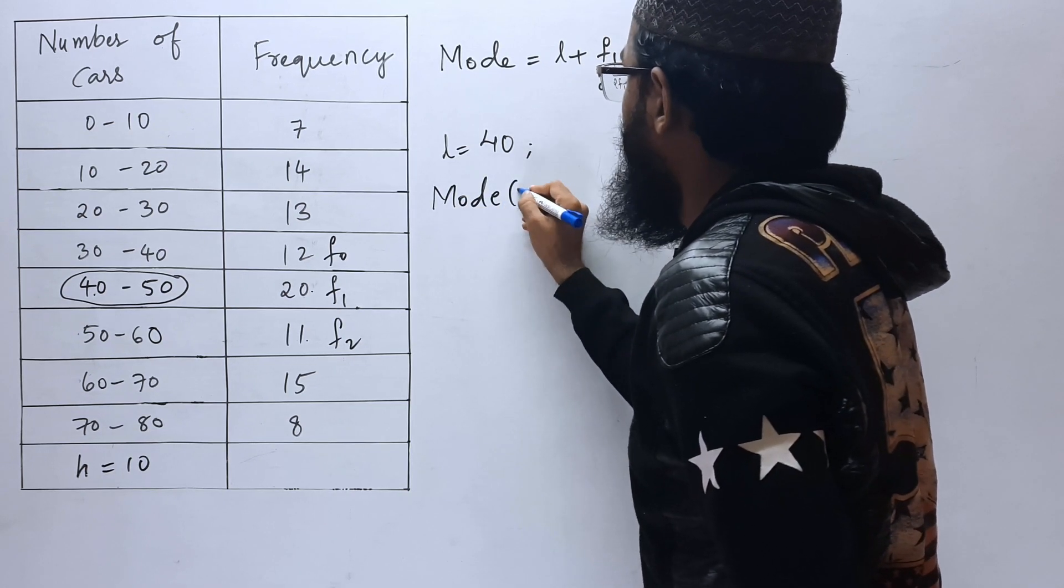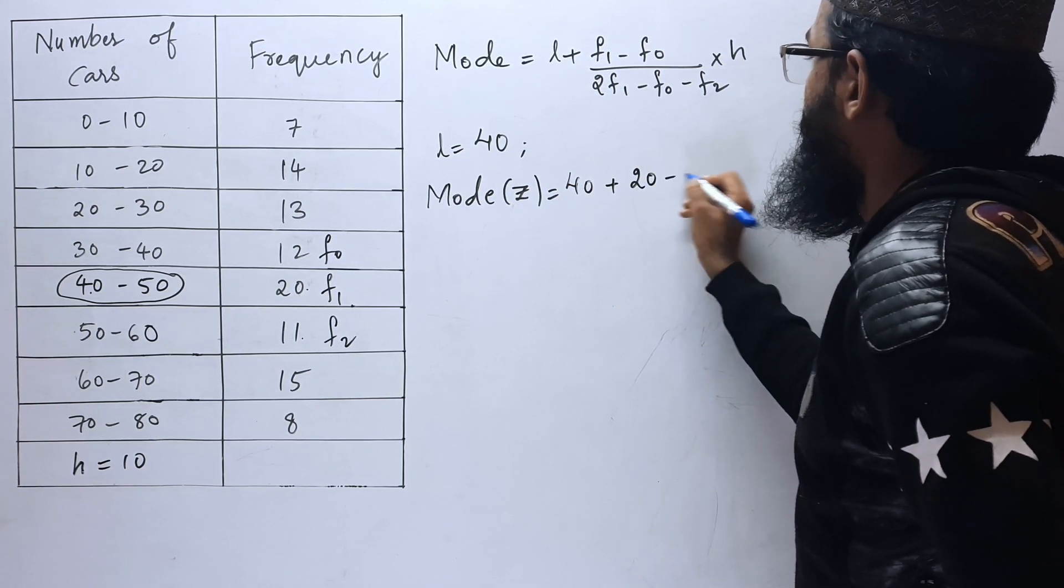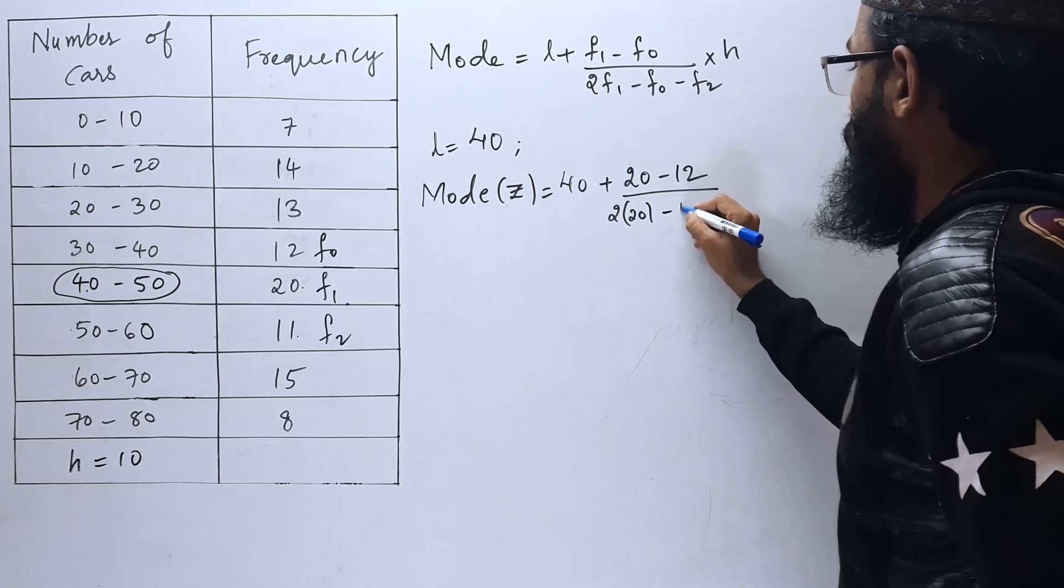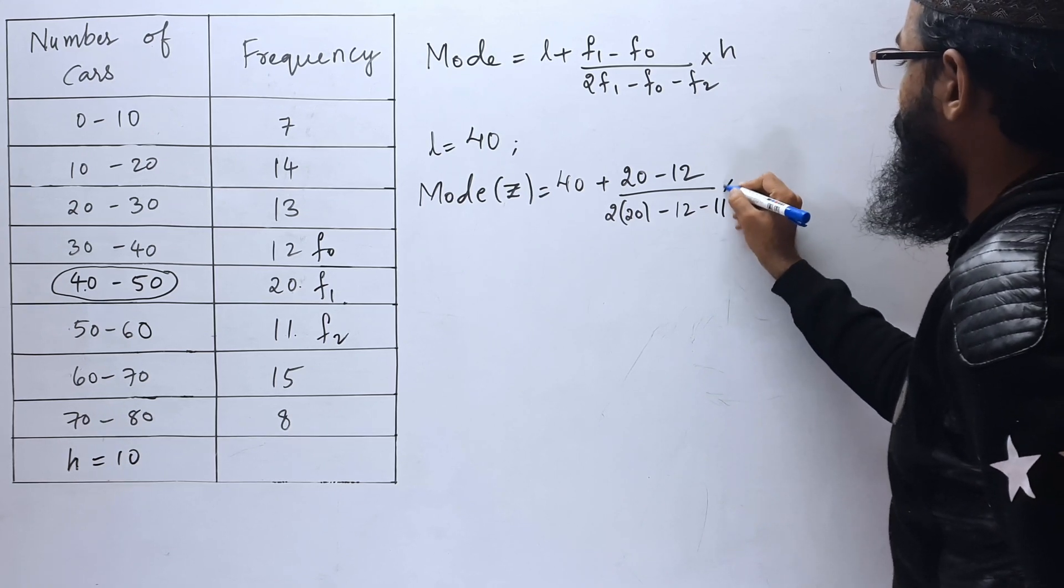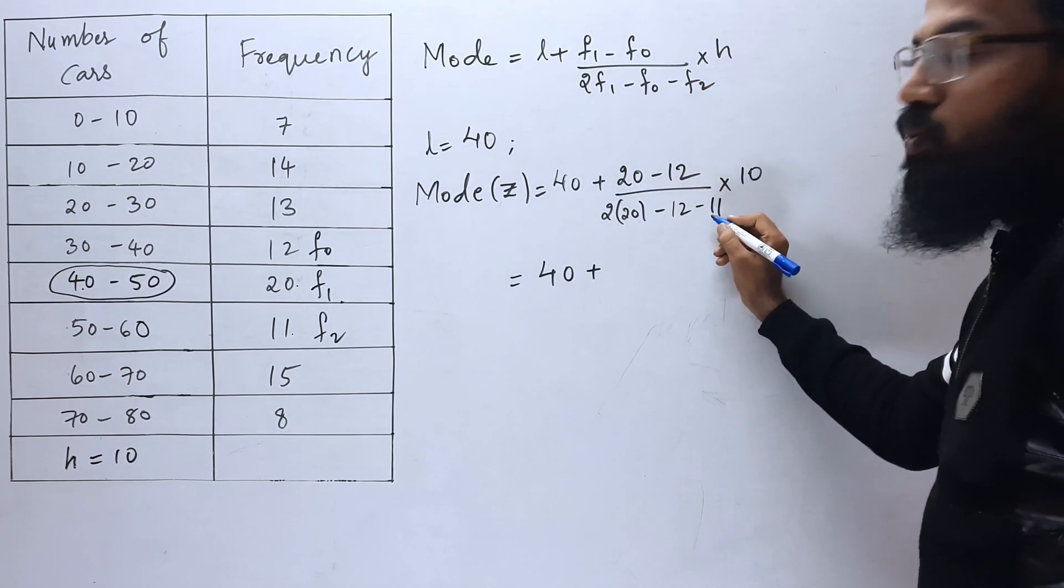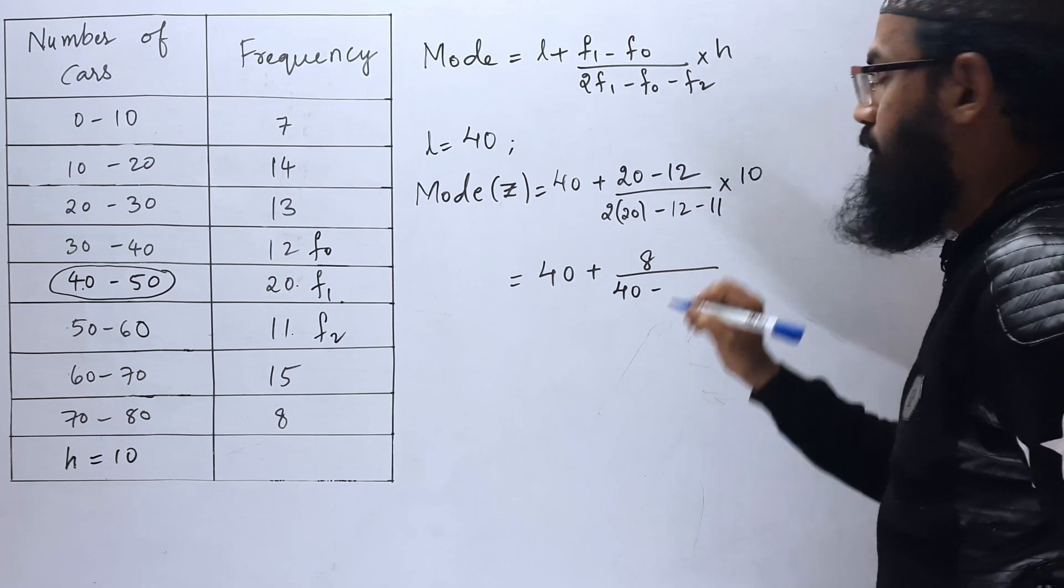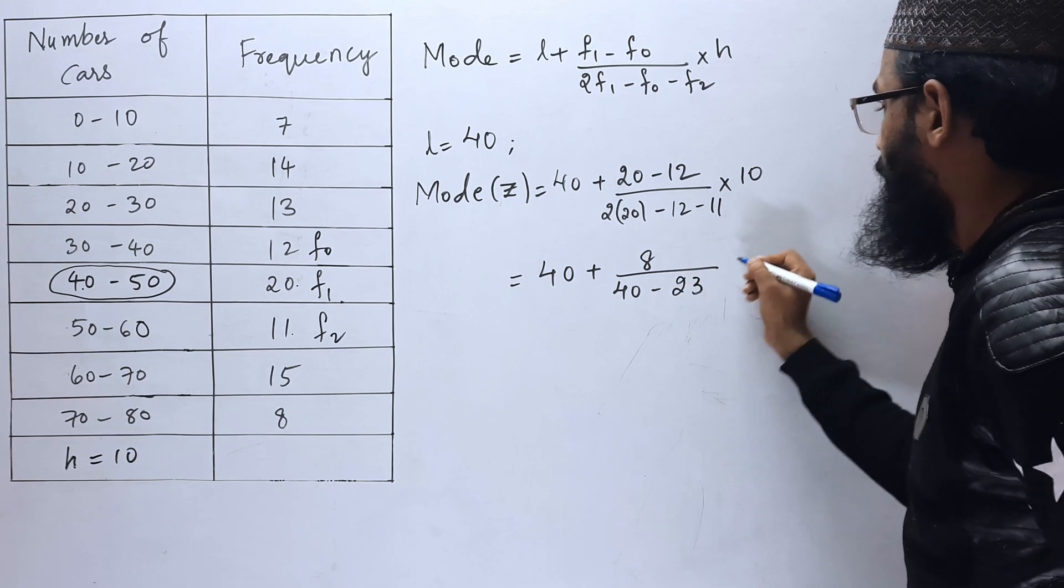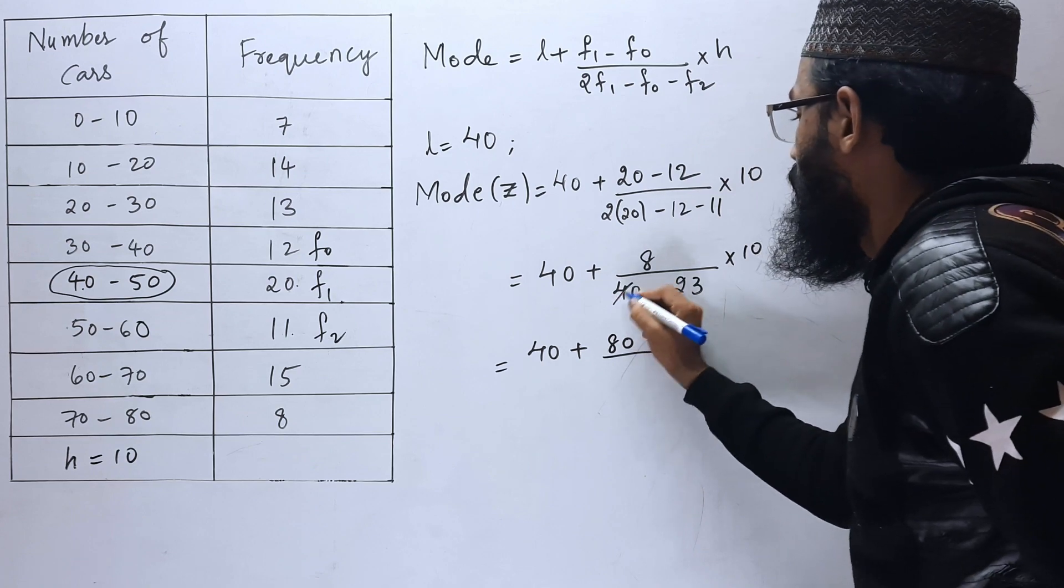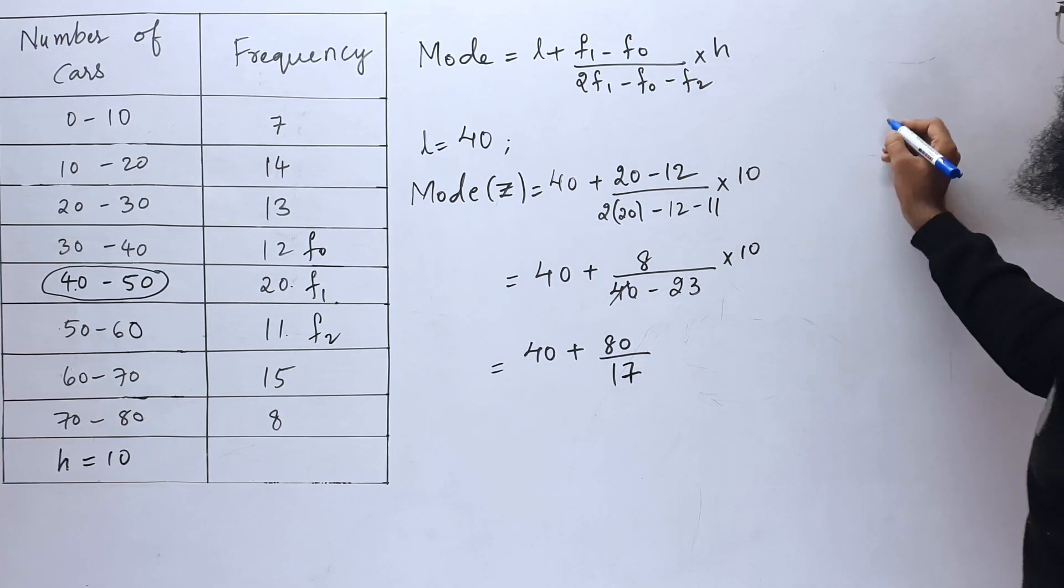Mode, denoted by Z, is equals to L. L is 40 plus F1 is 20 minus F0 is 12 by 2F1 20 minus F0 12 minus F2 11 into H. H is 10. 40 plus 20 minus 12 is 8. We can write 40 plus 80 by 40 minus 23 is 17. Let us divide this 80 by 17.